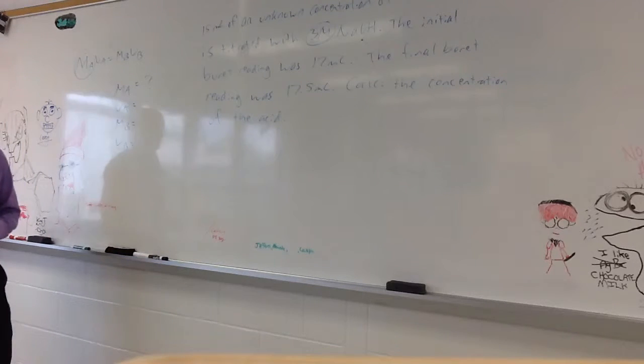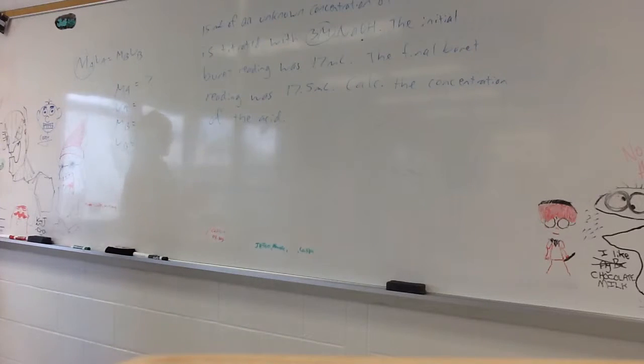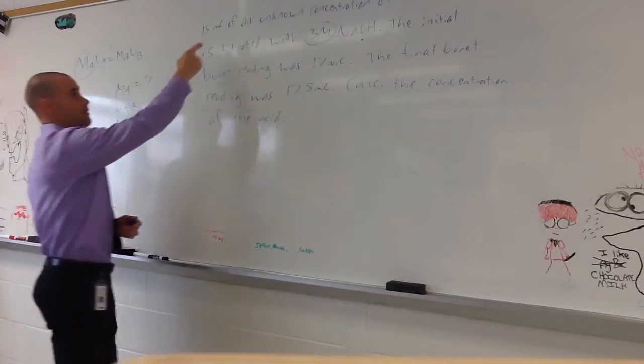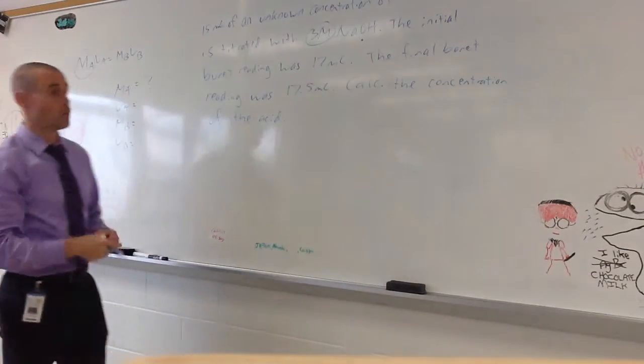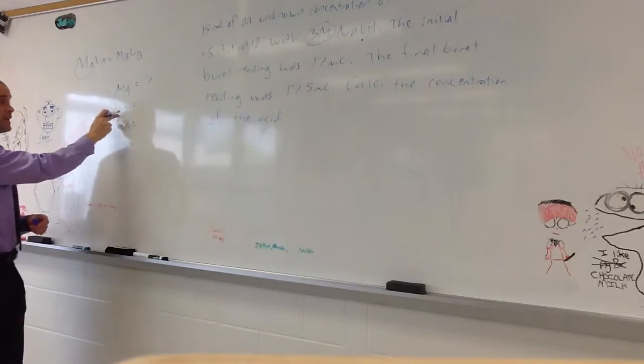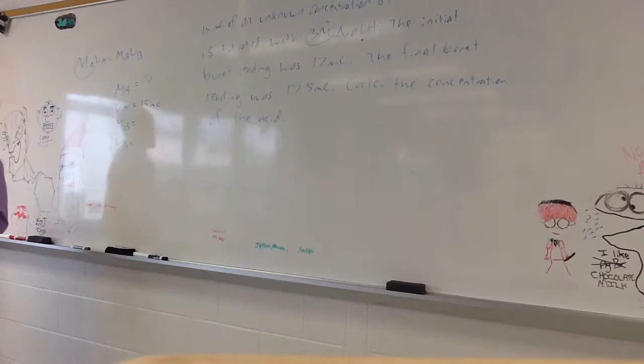VA is the volume of the acid. Reading the question, who can tell me how much acid is in that flask? 15 milliliters. It's the first sentence. It's 15 milliliters of an unknown concentration of HCl. So, we know the volume, that's V, volume of acid, is 15 milliliters. But, we don't know the concentration.